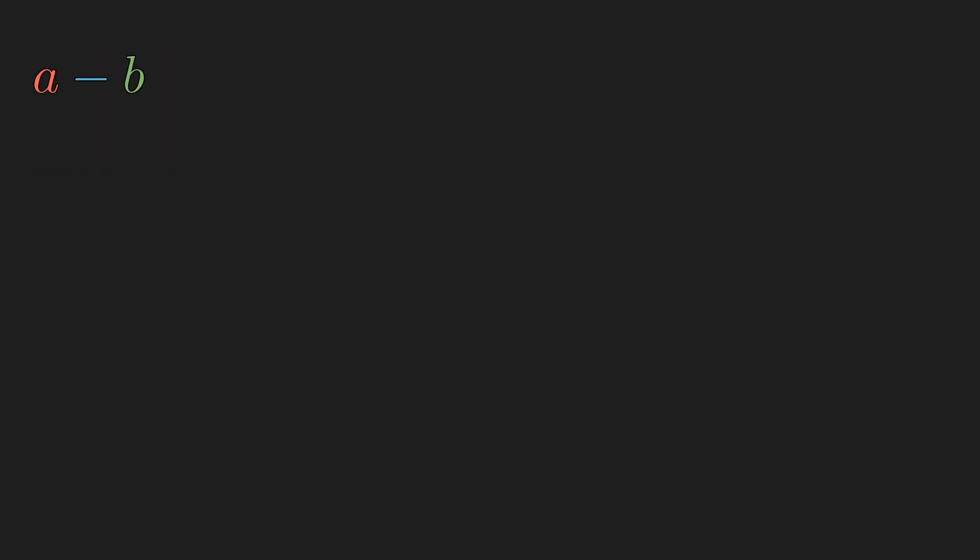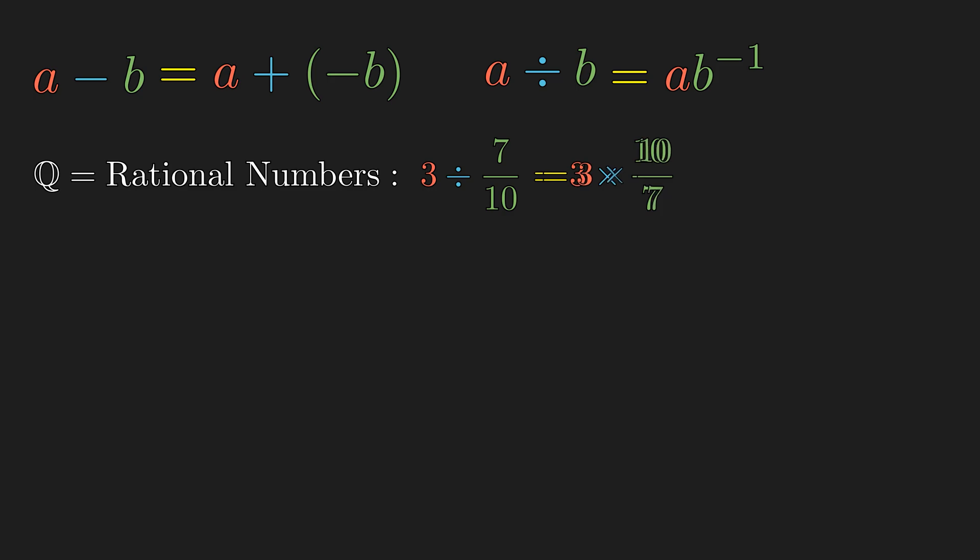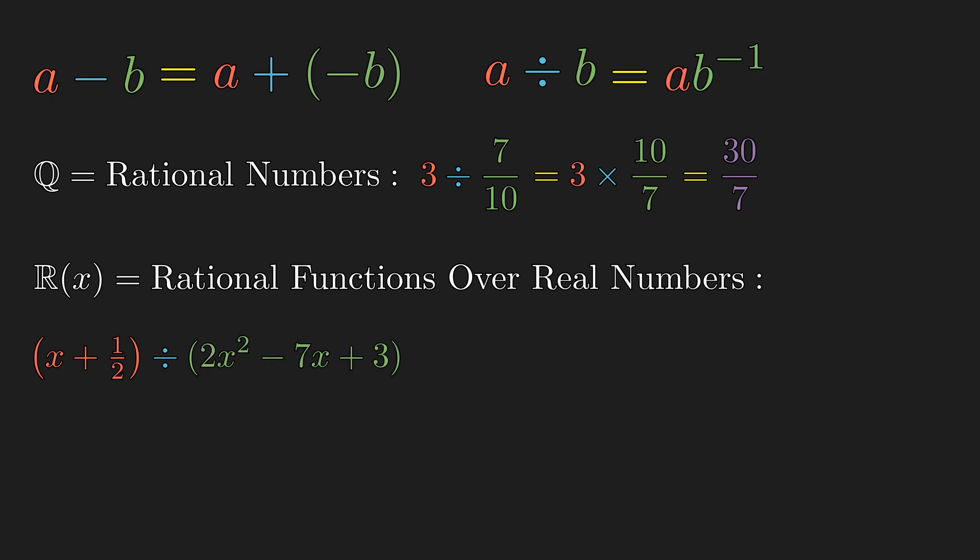And over these really nice rings, just like how we define a minus b to be a plus the additive inverse of b, we can define a divided by b to be a times the multiplicative inverse of b. For example, over the field of rational numbers, division is just taking product with the reciprocal of the second number. And over the field of rational functions over the reals, we can easily divide using the same method.